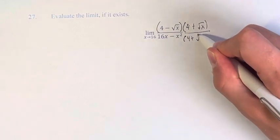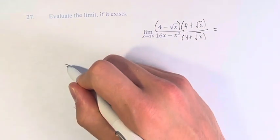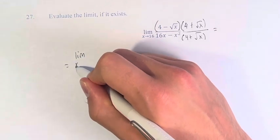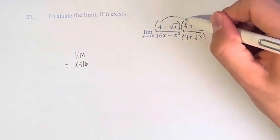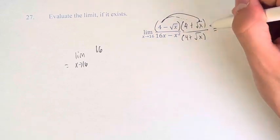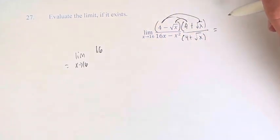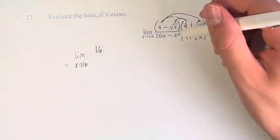And of course, you have to multiply the denominator by the same thing. And then what that's going to do for us is on top, we're going to have 4 times 4, that's 16. And we have 4 times the square root of x minus another 4 times the square root of x, meaning those terms are going to cancel.